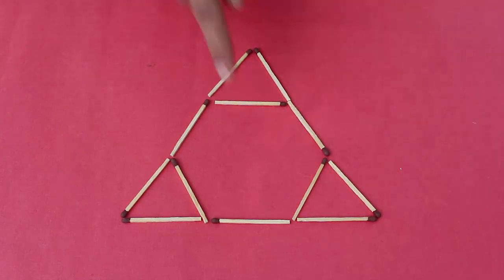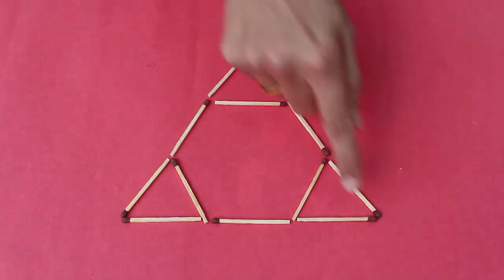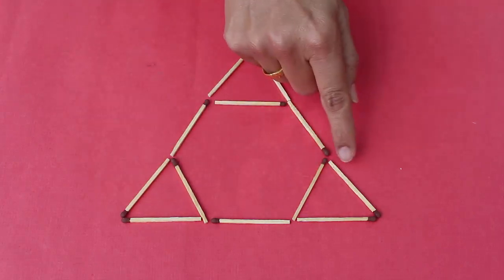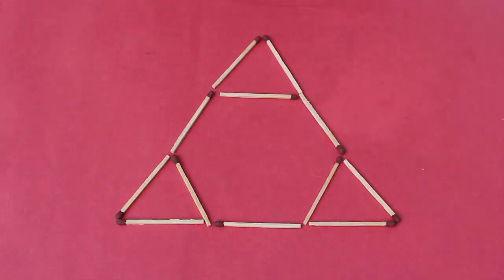Now in the first puzzle you have a hexagon in the center and three small triangles and one big triangle. The puzzle is can you make one hexagon and six small triangles from this configuration.